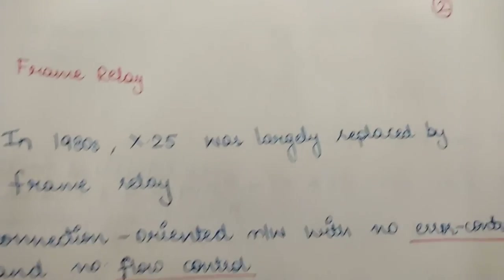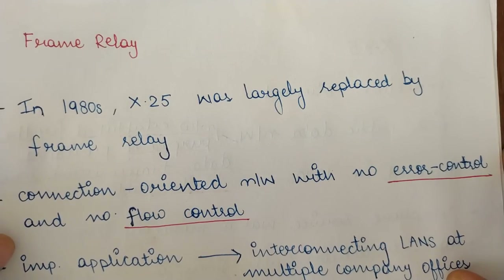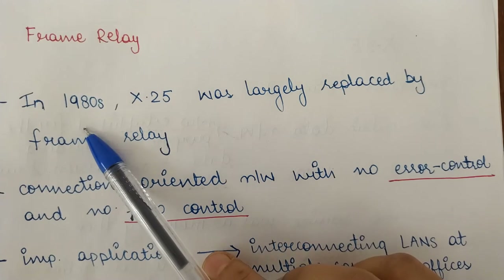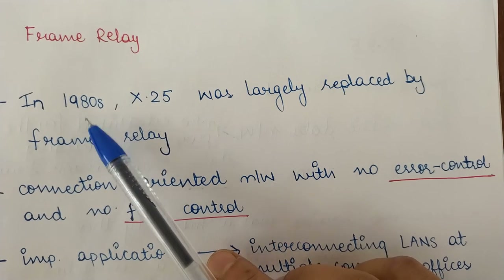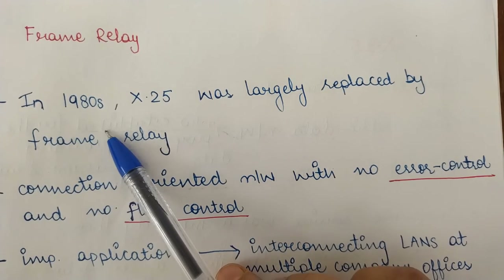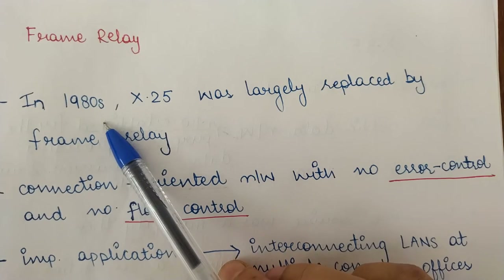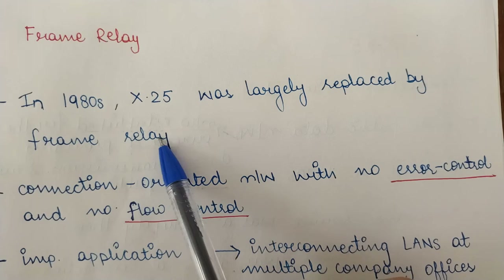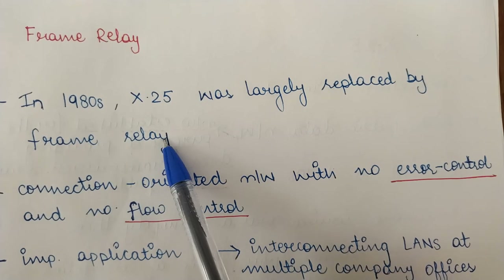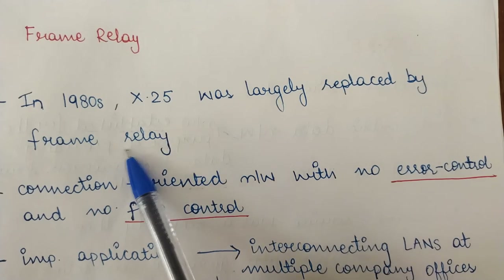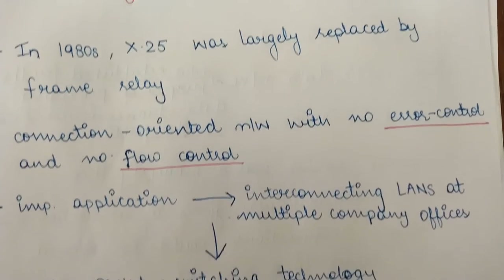Now we will look at another type of network: Frame Relay. X.25 was deployed in the 1970s and had mixed success for almost a decade, but in the 1980s the X.25 network was replaced by the Frame Relay network.